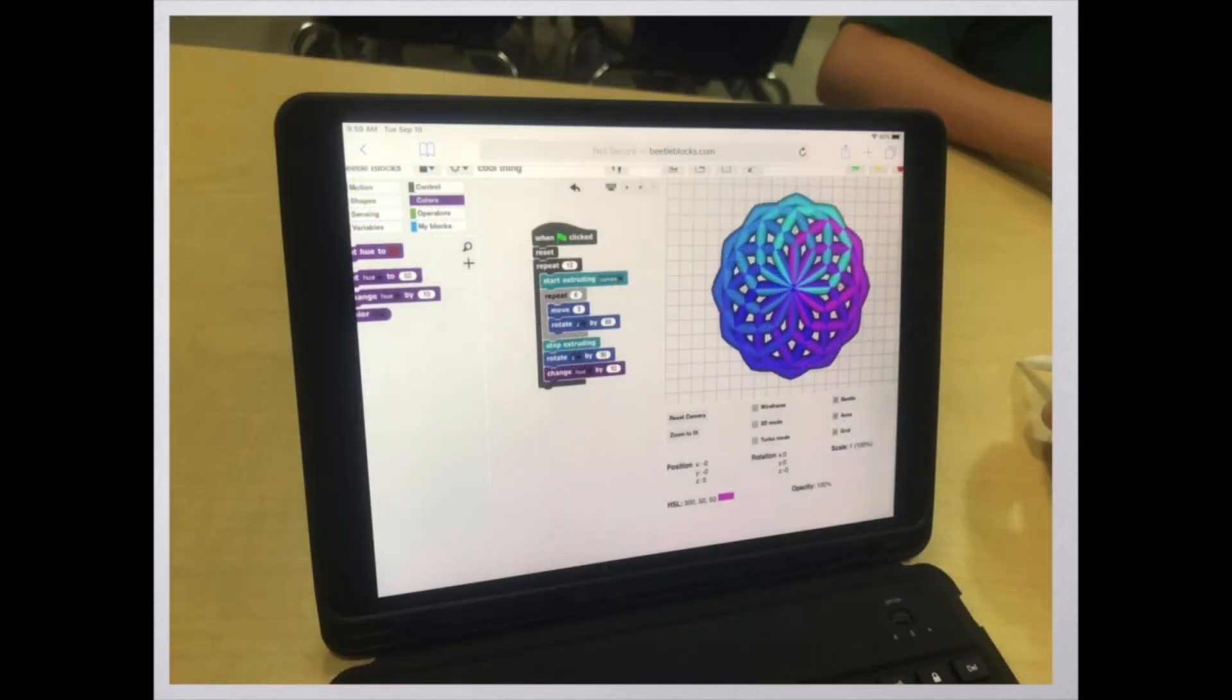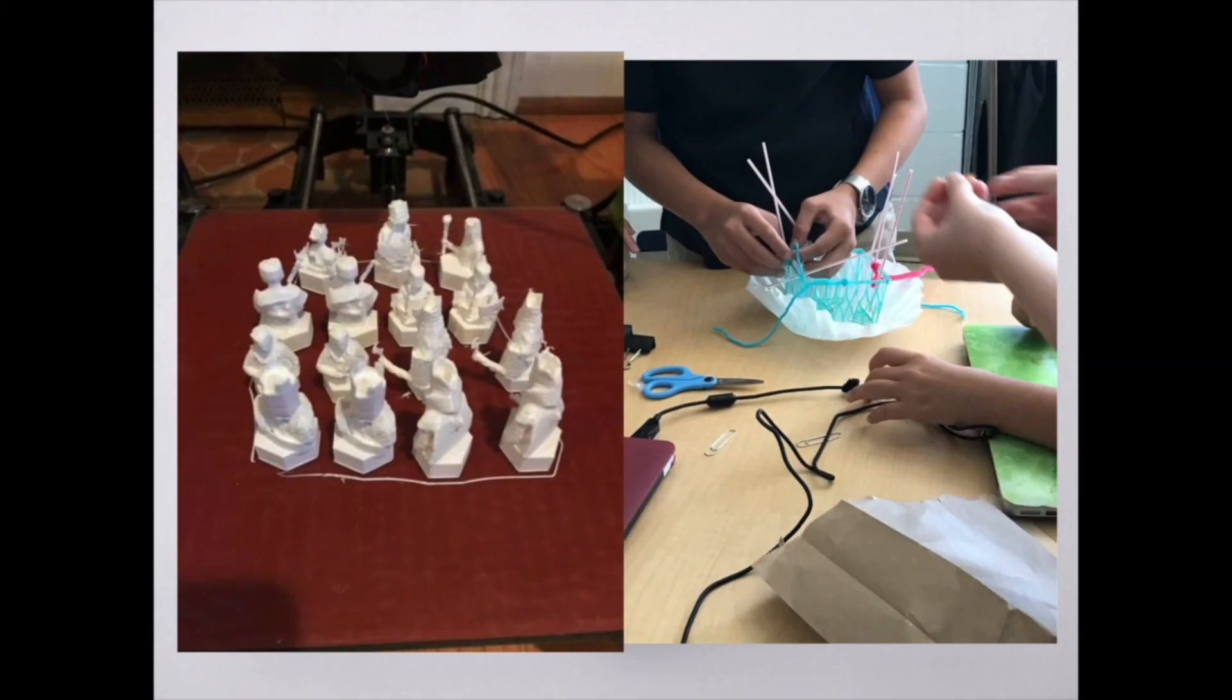This is an example of a program that our fifth and sixth graders use called beetle blocks. And it allows them to code through patterns. And then we can take this design and laser cut it or use it on the CNC machine or even 3D print it. So this is an integrated concept right here.